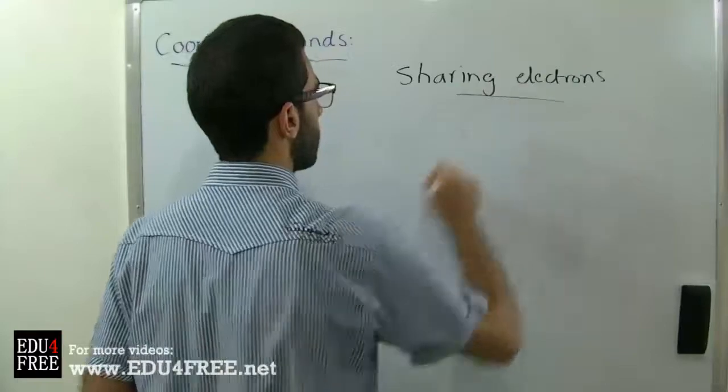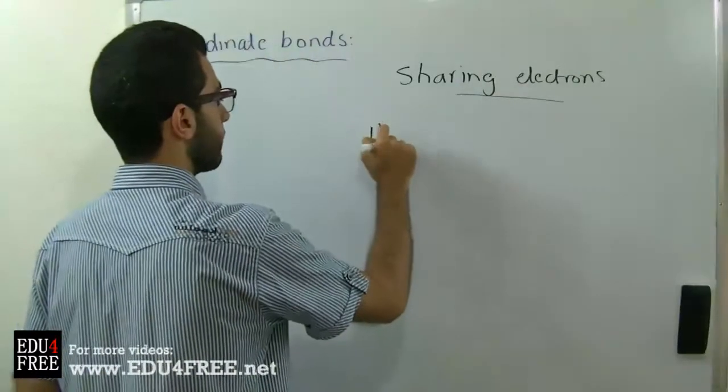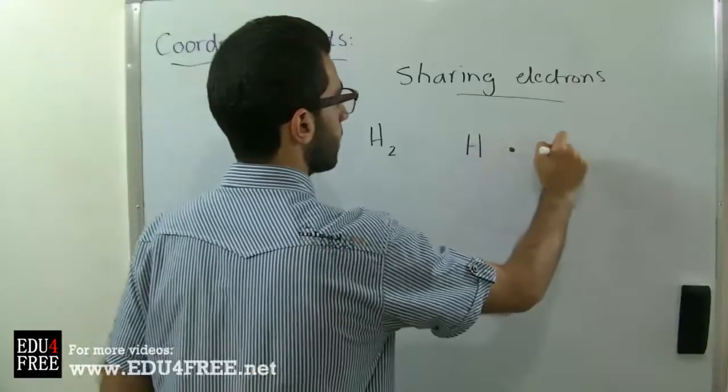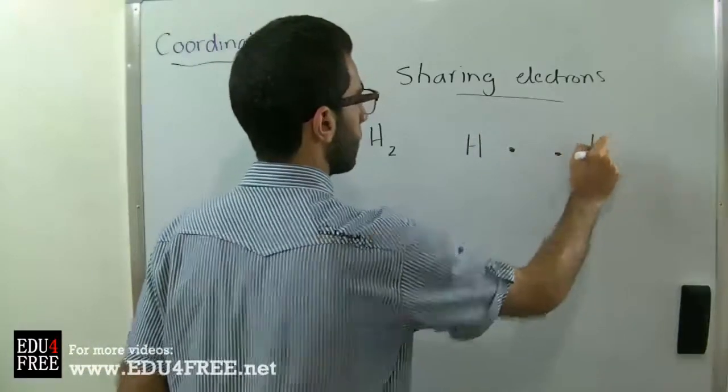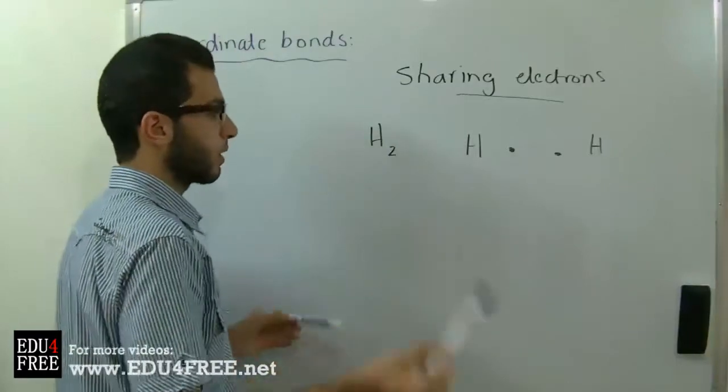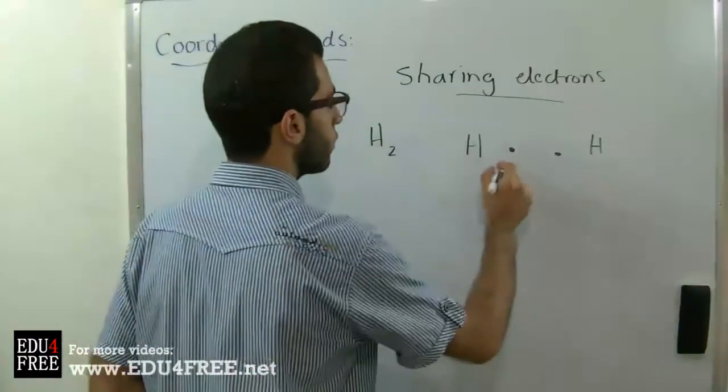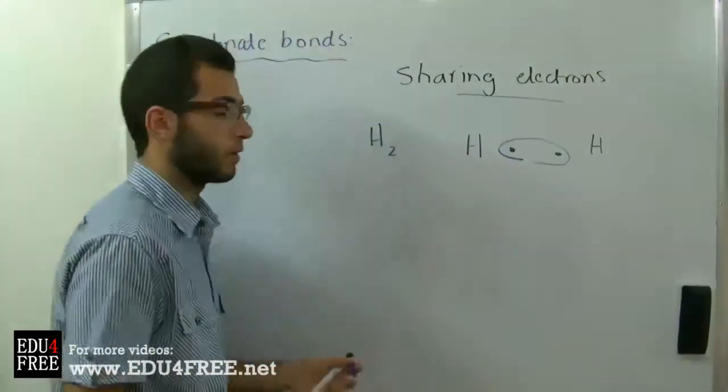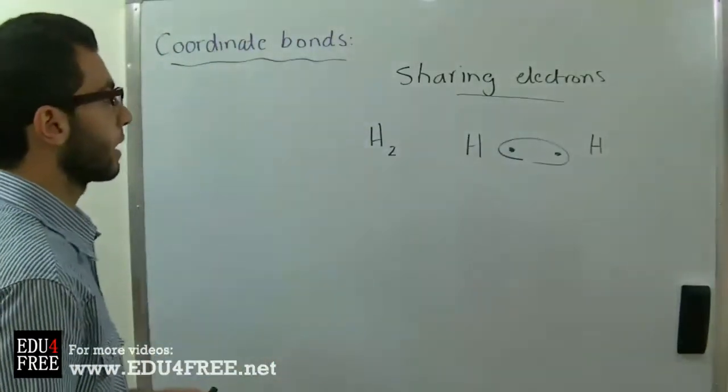The simplest example that we have is hydrogen. Each hydrogen atom contains one electron at the outermost energy level. Both energy levels fuse together forming a bigger energy level containing two electrons, and these two electrons form the covalent bond between the two hydrogen atoms.